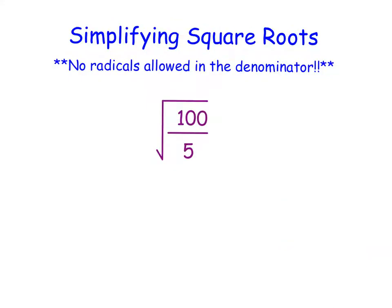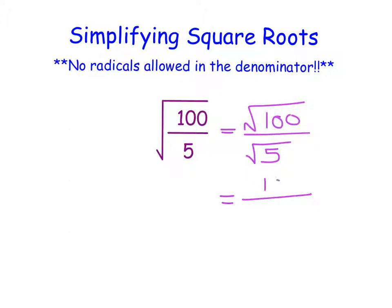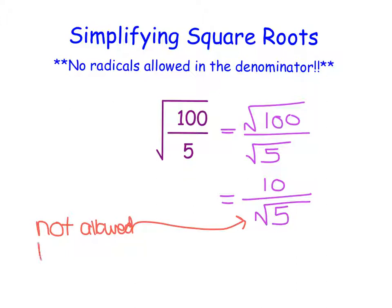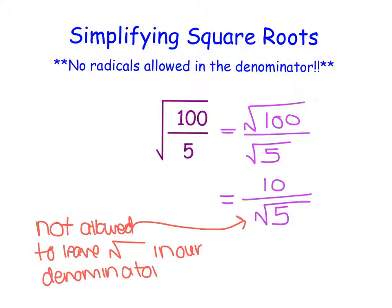Now let's look at the following example. Following the same thought process, we square root our numerator and square root our denominator. The square root of our numerator becomes 10, but the square root of the denominator is fully simplified and we're left with the square root of 5. However, in mathematics, it is bad practice to leave a square root in our denominator. We are not allowed to leave a square root or a radical in our denominator.